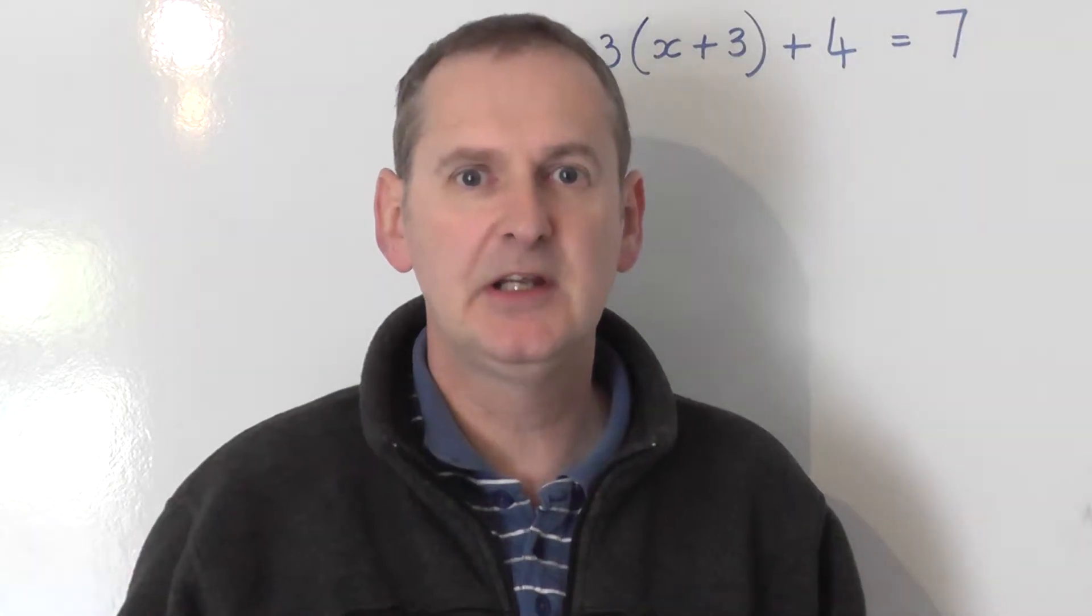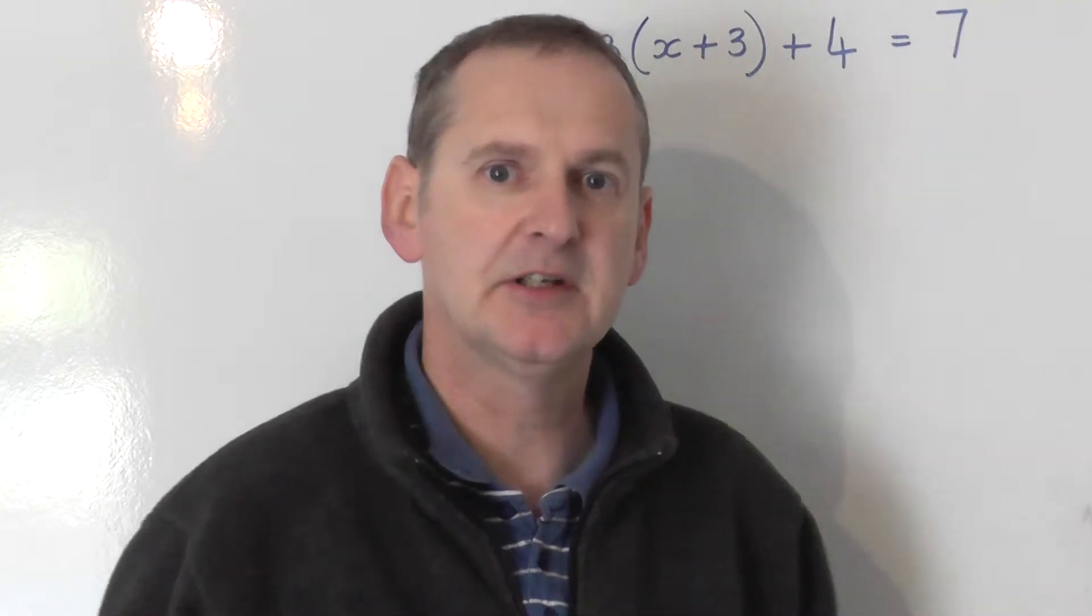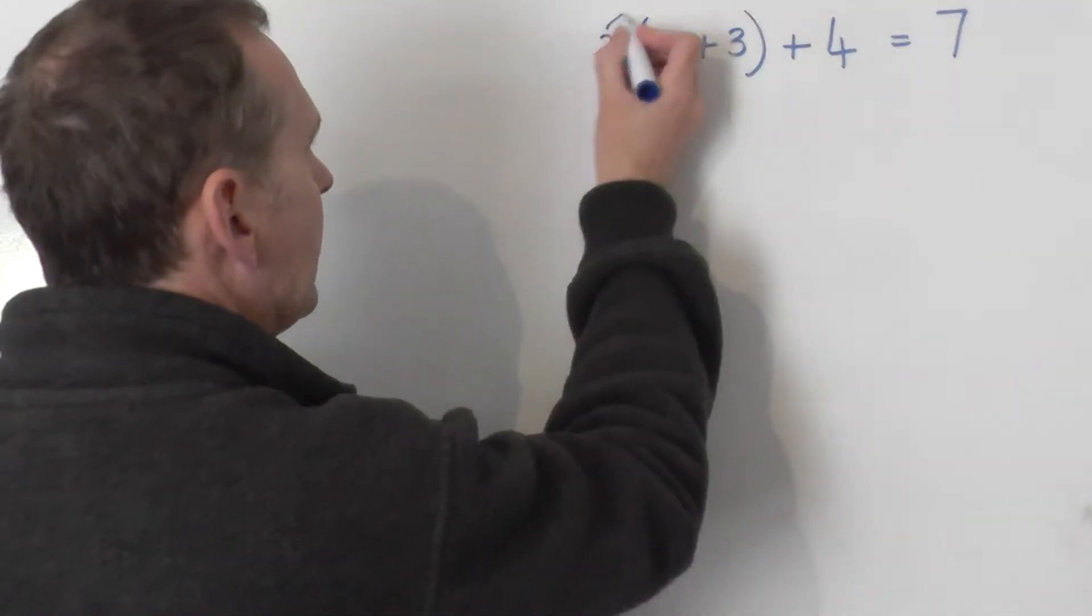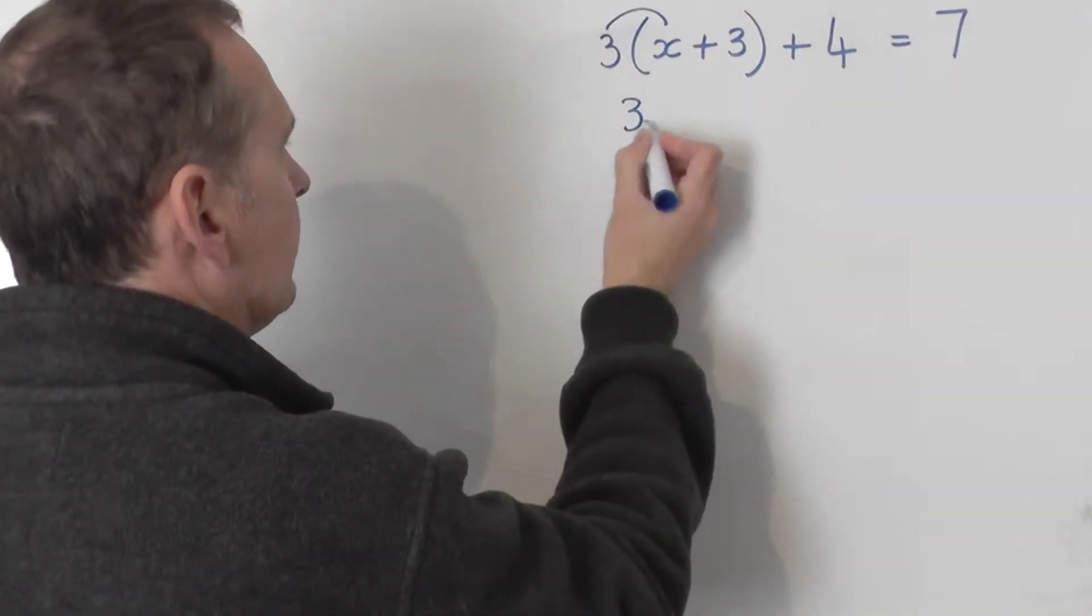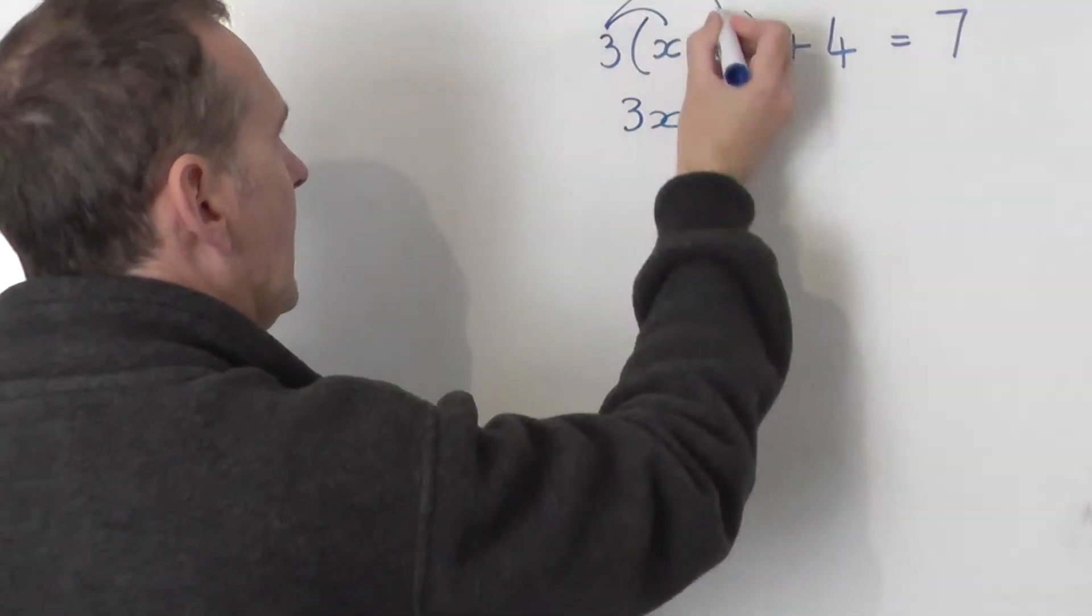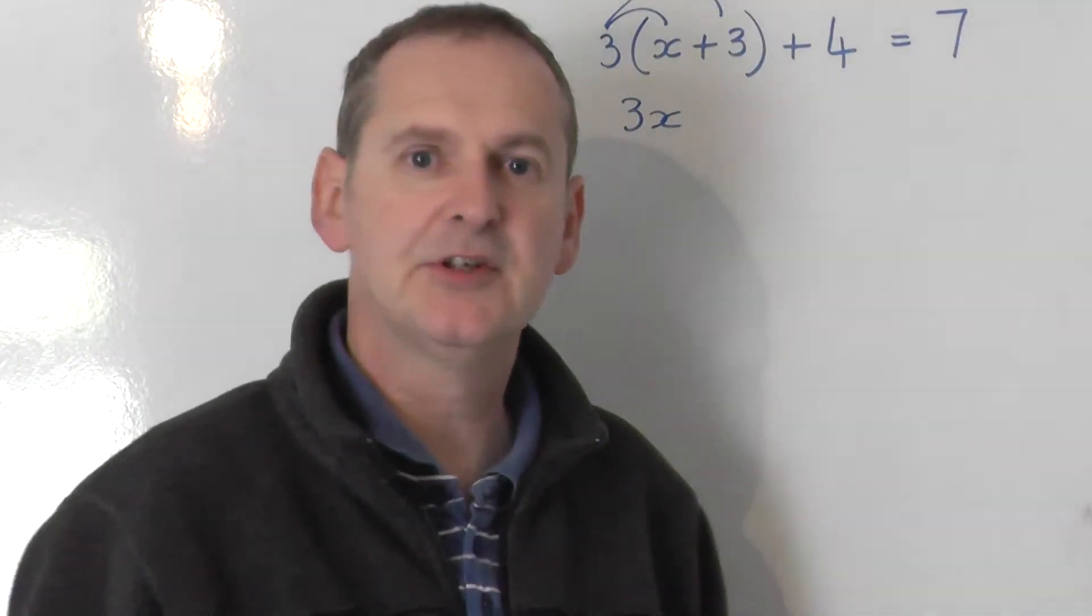So the first thing is to get rid of that bracket and we do so by expanding out that bracket. So, we say 3 multiplied by the x gives us 3x. 3 multiplied by the positive 3 gives us positive 9.